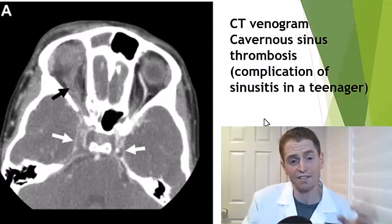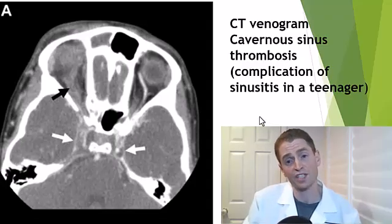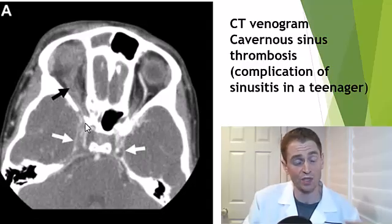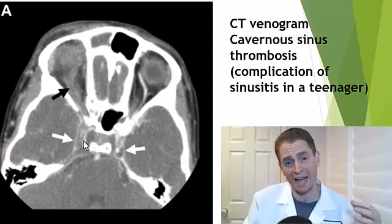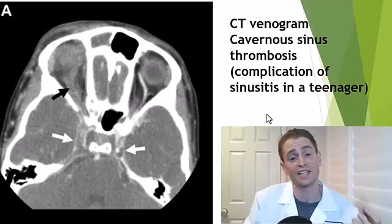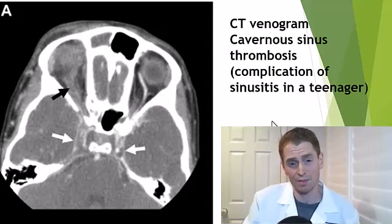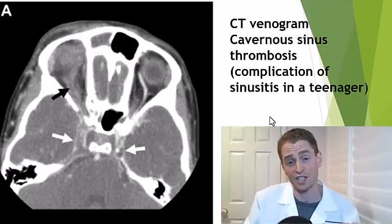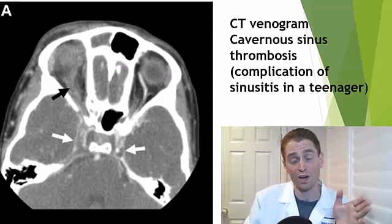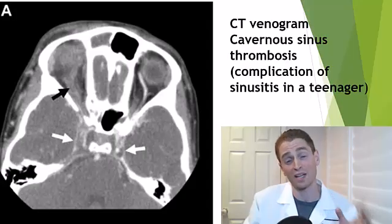Here is a CT venogram showing cavernous sinus thrombosis. Normally the cavernous sinuses, which are a venous structure, fill up avidly with dye, but there are huge gaps here. This was actually a complication of a sinus infection in a teenager. It can cause symptoms such as a bulging red eye and cranial nerve deficits, such as numbness in the cheek or sixth nerve palsy — inability to move the affected eye outward. Again, it is typically treated with blood-thinning medication.